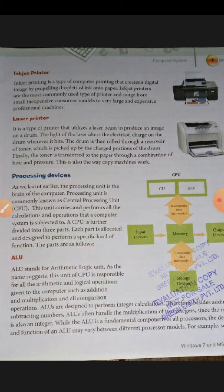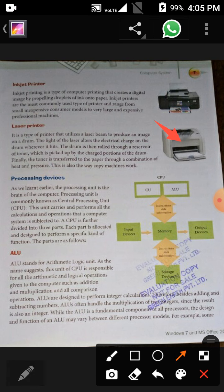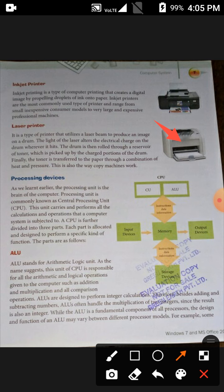Next is the laser printer. A laser printer is a type of printer that utilizes a laser beam to produce an image on a drum. The light of the laser alters the electrical charge on the drum; the drum is then rolled through a reservoir of toner which is picked up by the charged portions. Finally, the toner is transferred to the paper through a combination of heat and pressure — the same way copy machines work.